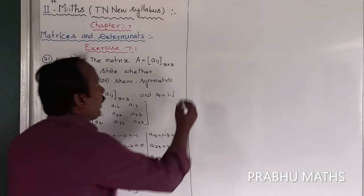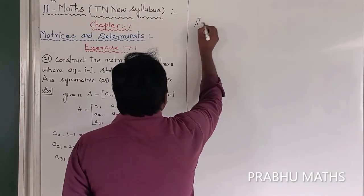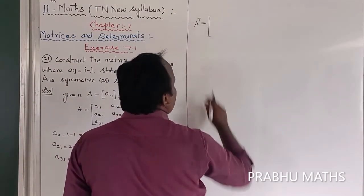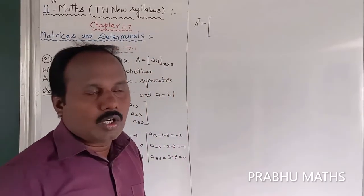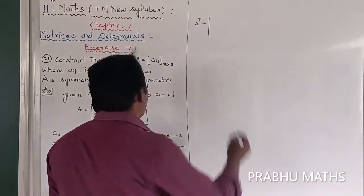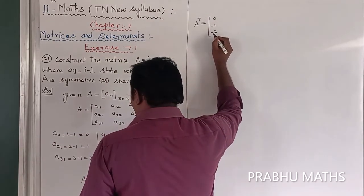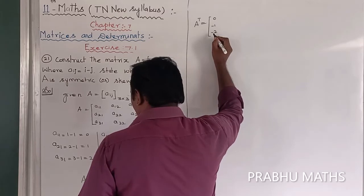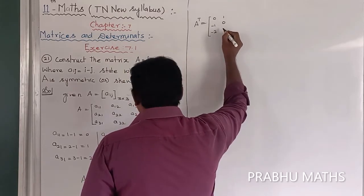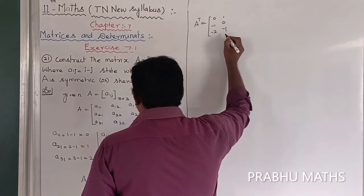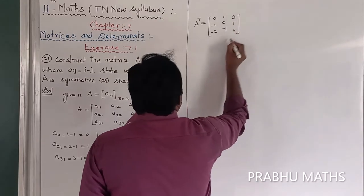Next, we find A transpose. A transpose means the rows are transferred to columns and columns are transferred to rows. So A transpose is equal to [0, 1, 2; minus 1, 0, 1; minus 2, minus 1, 0]. The first row becomes the first column.